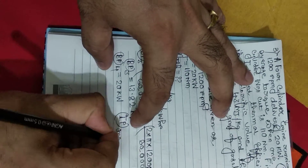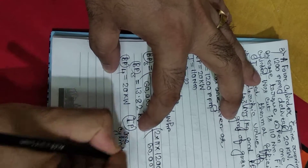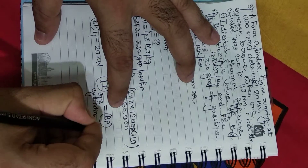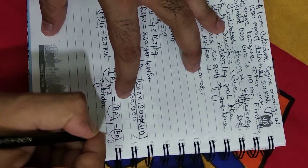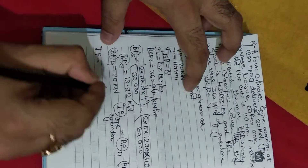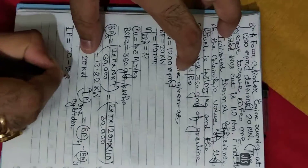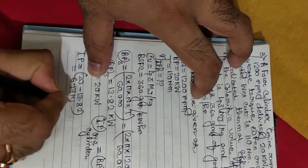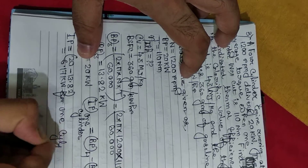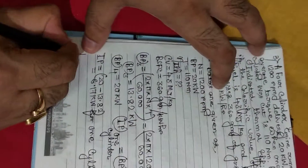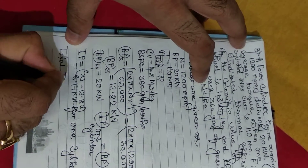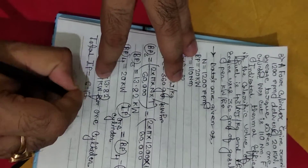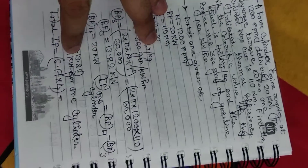The indicated power for one cylinder equals BP₄ minus BP₃, which is 20 minus 13.82 = 6.17 kilowatt for one cylinder. Therefore, total indicated power IP = 6.17 × 4 = 24.70 kilowatt.